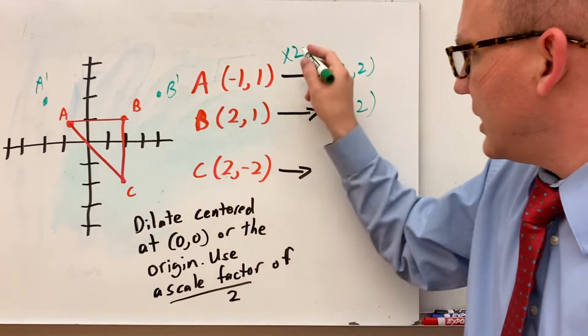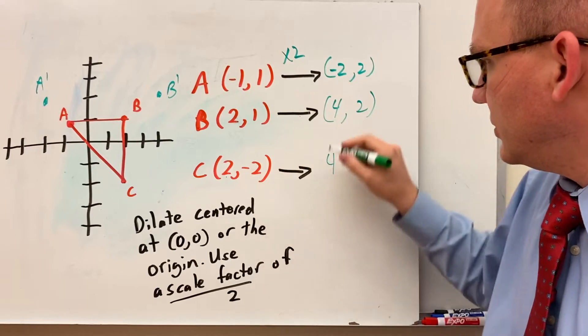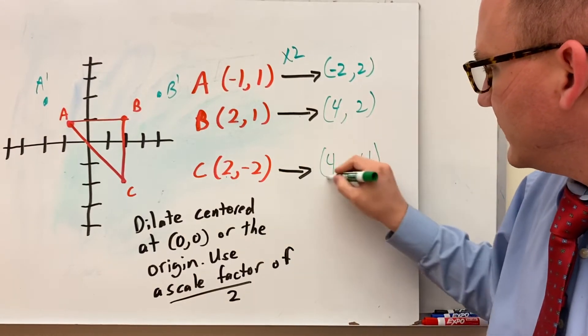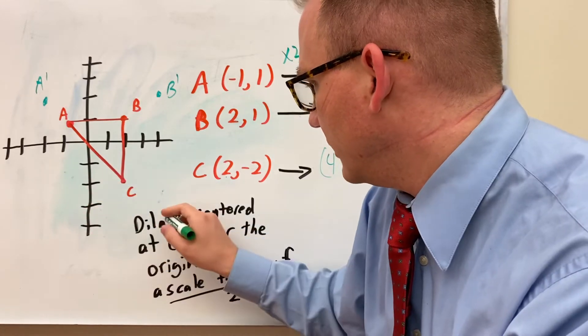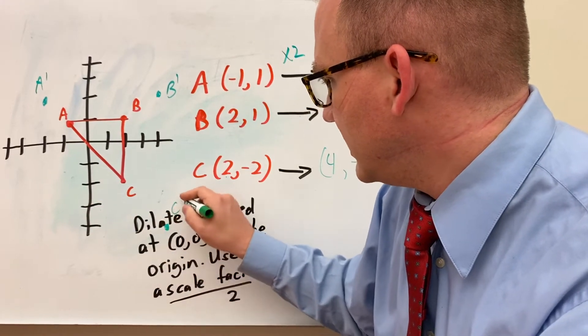And C would be 2 times 2 is 4, negative 2 times 2 is negative 4. This would be C prime, so over 4, down 1, 2, 3, 4. It's going to be right here in the middle of this. This would be C prime.